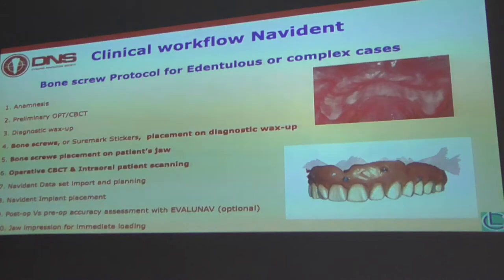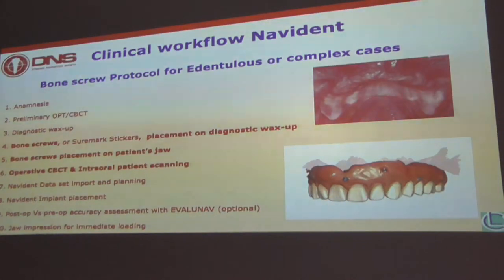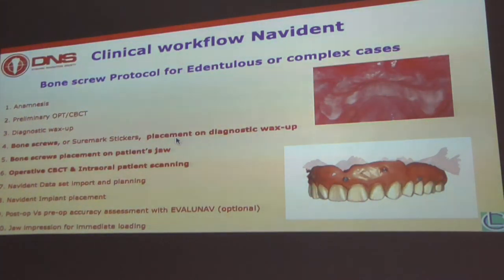Here are the steps I'm using daily. Analysis — as Sanjay was saying — is very important to select the case. Preliminary OPT and CBCT — mostly the OPT — is a good way to check how the bone is and what is possible to do. Then I make a diagnostic wax-up, because Navident helps us place the implant according to the prosthetic work — it's not only placing implants wherever there is bone, but according to the wax-up and prosthetic work. The fourth point is bone screws: place them in the mouth as I explained. You can use landmarks on the diagnostic wax-up, or I use bone screws because it's an easy and fast way.